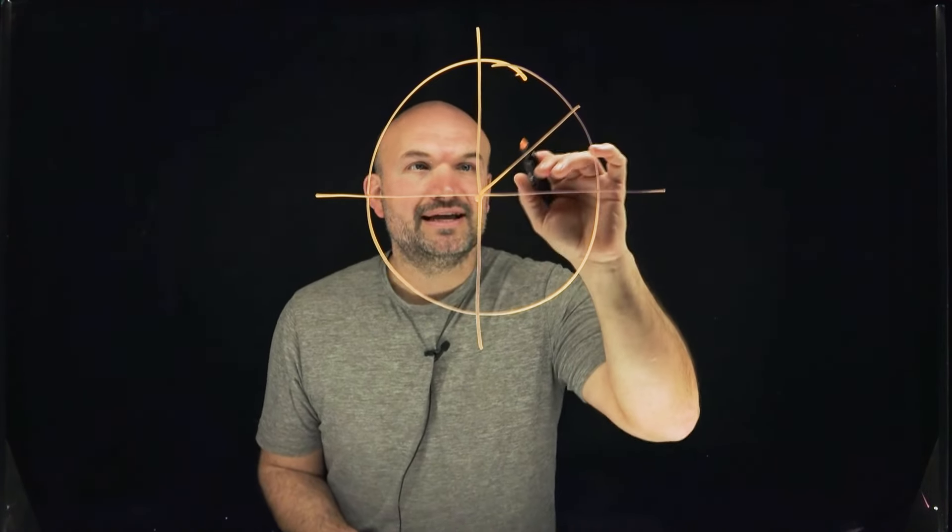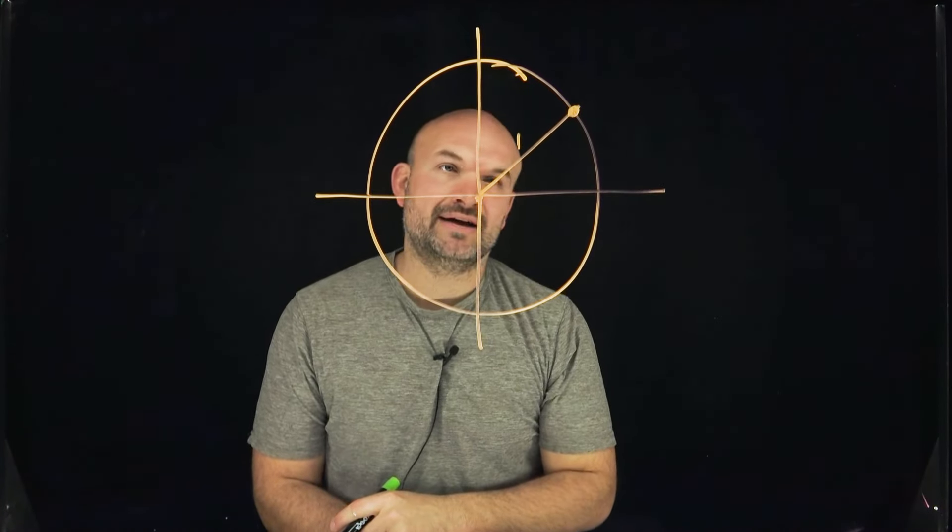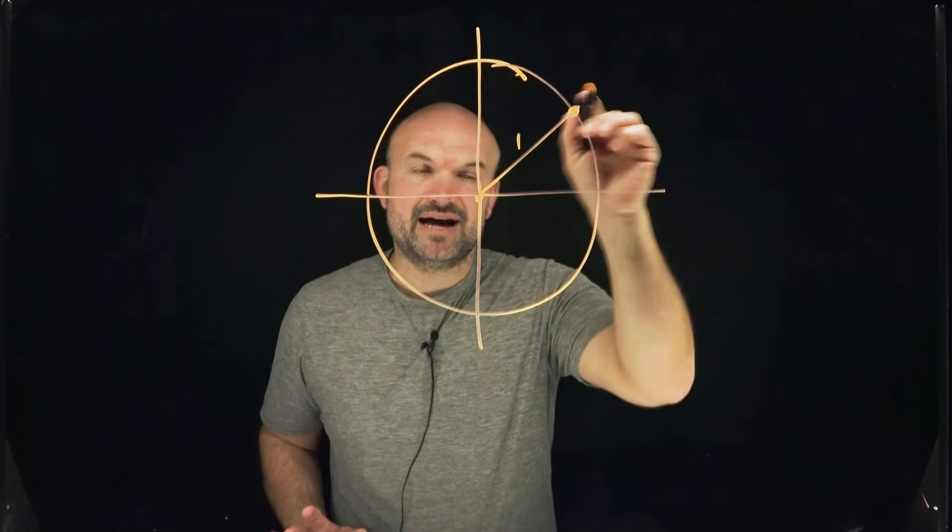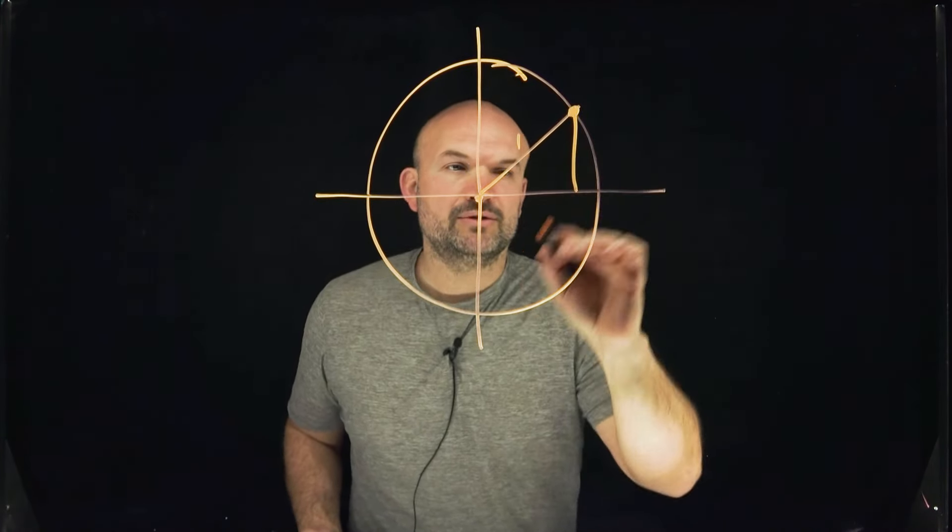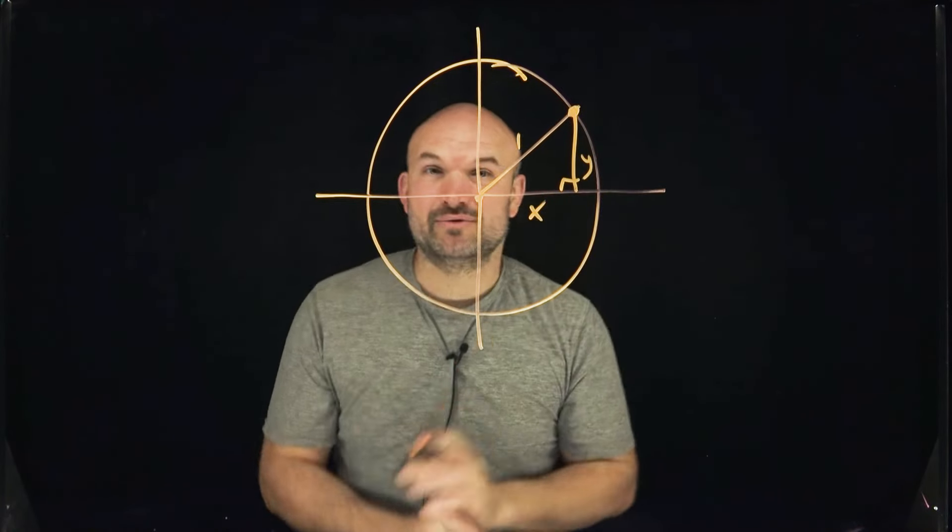The important thing about the unit circle here is that the radius is going to be one and we're going to have a point here on the unit circle. Now, before going through any kind of values on the unit circle, let's just say we have a random point. We know that we can represent that here as X.